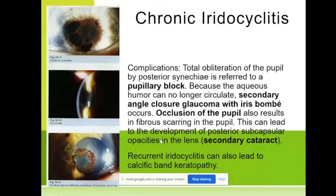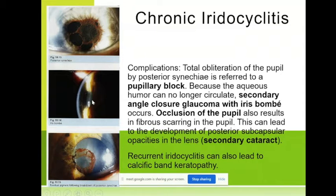In chronic iridocyclitis there are many complications — posterior synechiae and cyclitic membrane can lead to angle-closure glaucoma with iris bombata, because the fluid cannot pass through the pupil from the posterior to the anterior chamber. There is iris bombata and the pressure rises from 20 up to 40–60 mmHg.